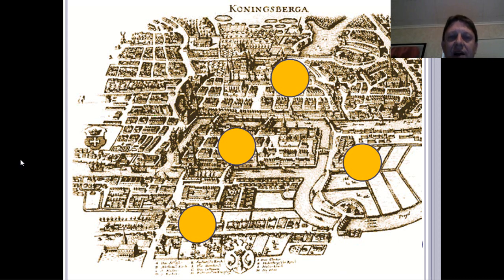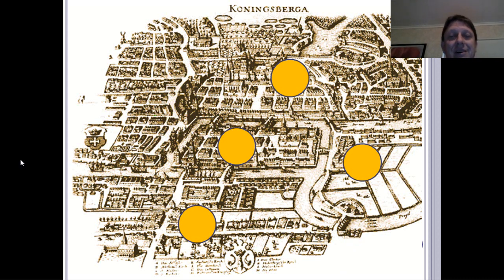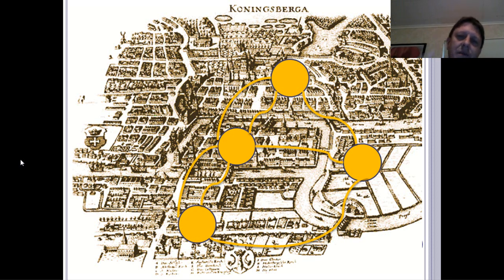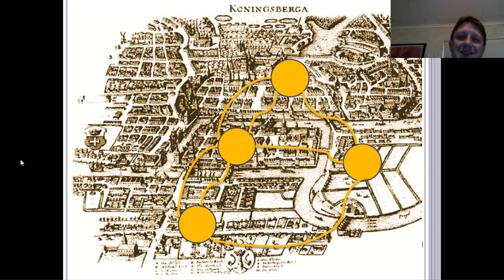His first step was to recognize that in the city of Königsberg there are four land masses — a couple of islands and some land masses connected to the rest of Europe — all connected by bridges. These he idealized as simple circles. Then he drew the paths that one could take from one land mass to another within the city of Königsberg. These are paths, and each of them crosses a bridge.